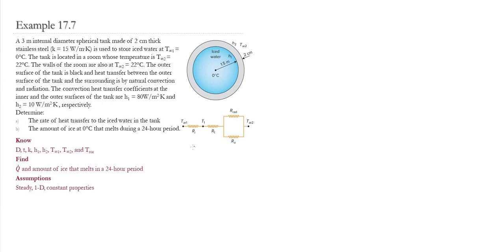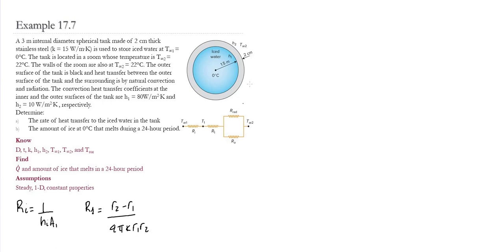To solve this problem, we're going to use thermal resistances. Inside the tank, we have convection resistance, which we'll call Ri. Ri is simply 1 over hi times the internal surface area. The second resistance is R1, the conduction resistance through the thickness of the stainless steel tank. R1 is given by (r2 − r1) divided by 4πK·r1·r2, which is the conduction resistance for a spherical shape.